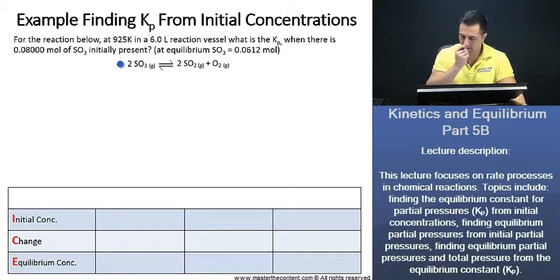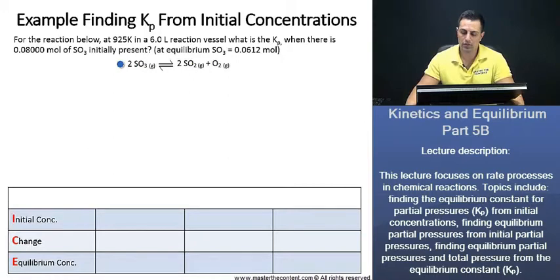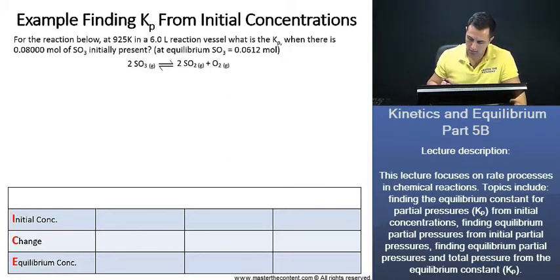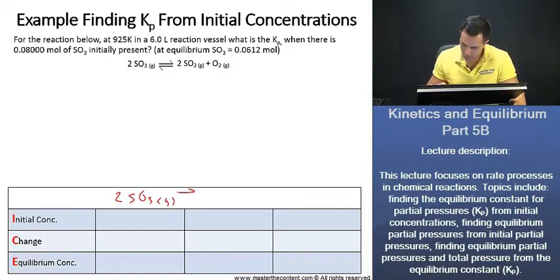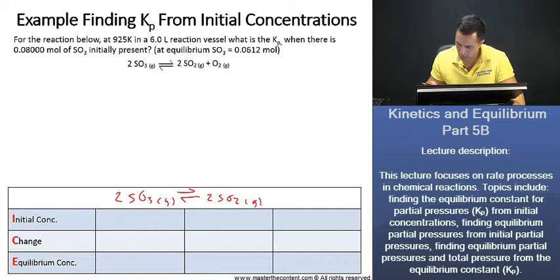If we look at our reaction, is it balanced? That's what we always need to check first. Yes, our reaction is balanced. Let's write it down. We now have 2 moles of SO3 gas converting to give us 2 moles of SO2 gas plus O2 gas.